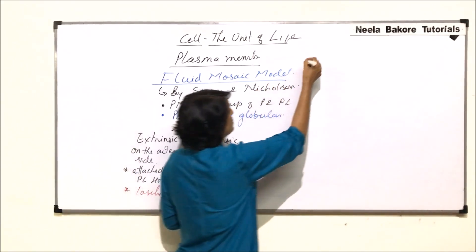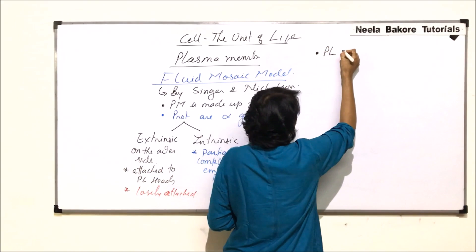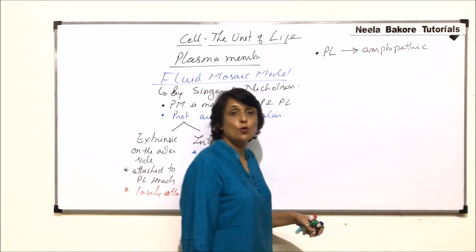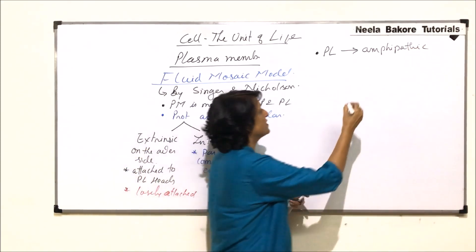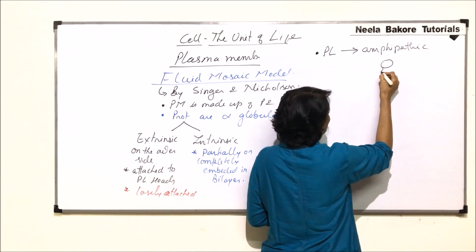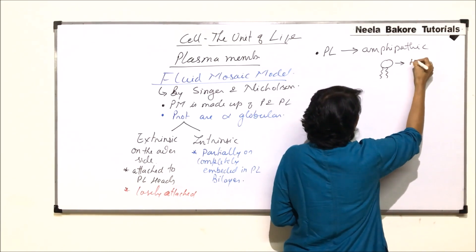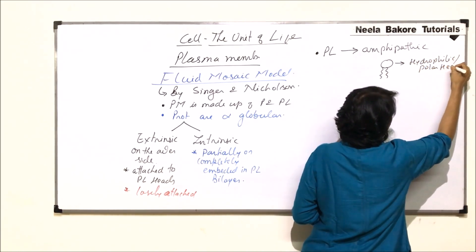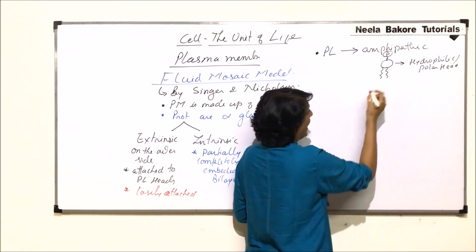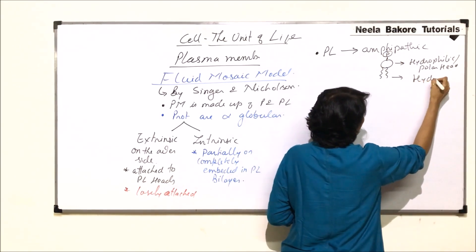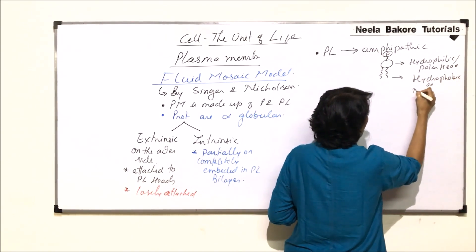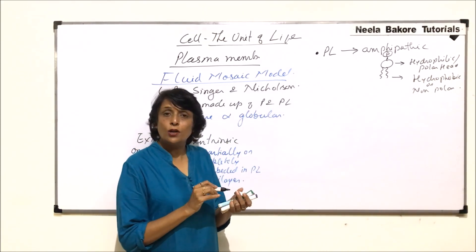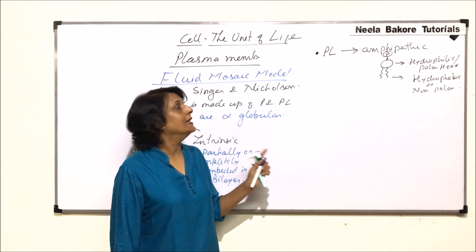The next point is about phospholipid molecules. Phospholipid molecules are amphipathic — the same as described by Daniele and Davson. This means each molecule has one head and two tails. The head is a hydrophilic or polar head with an attached phosphate group, and the tails are hydrophobic or non-polar.